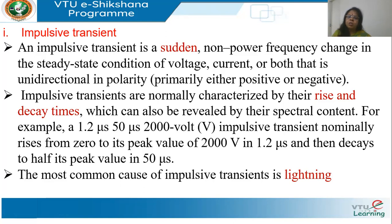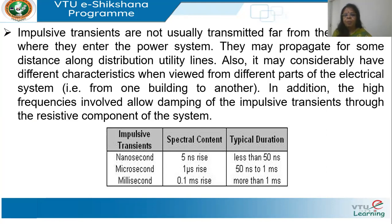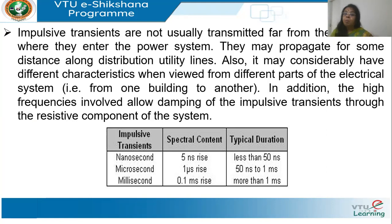The most common cause of impulsive transients is lightning. Impulsive transients are not usually transmitted far from where they occur because they die out very quickly. If a lightning strikes, the maximum impact is at the place it has struck and in nearby areas — it won't be felt 10, 20, or 30 kilometers away. They are quickly damped in the resistance of the network.